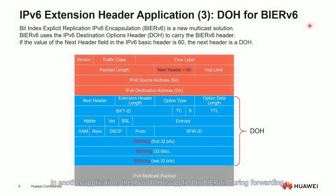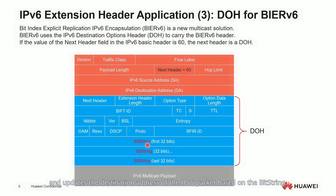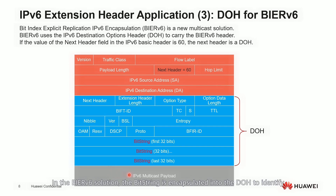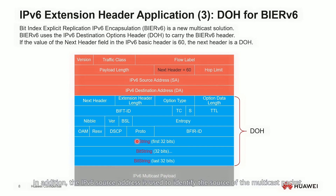In another application, the IPv6 destination options header (DOH) is applied to BIERv6. During forwarding, a device reads the bit string in a BIERv6 packet to determine the next replication node, and updates the destination address of the IPv6 packet based on the bit string. In this way, the entire forwarding process is presented as native IPv6-based source routing multicast. The IPv6 DOH carries information that needs to be processed by the node of the destination address. In the BIERv6 solution, the bit string is encapsulated into the DOH to identify a set of destination nodes of a multicast packet. In addition, the IPv6 source address is used to identify the source of the multicast packet, so BIERv6 multicast packets can be replicated and forwarded based on the IPv6 header.